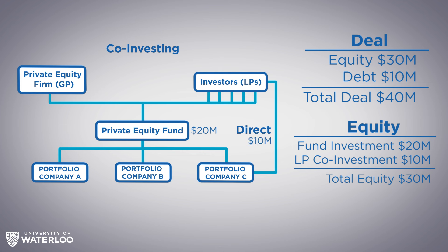This is advantageous to the investor because when investing through the fund, the investor pays full fees — typically 2% on $20 million. But due to the extra $10 million invested directly, the investor has the opportunity to go direct and therefore pay very little fees. Maybe there's a deal origination fee, but usually it's not very much, so they're able to get their fees down and get access to deals directly.